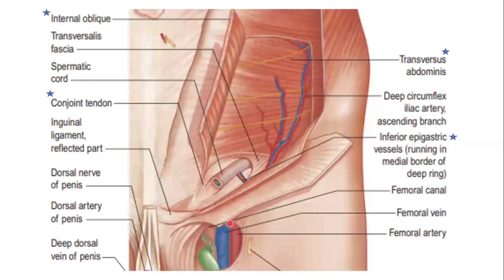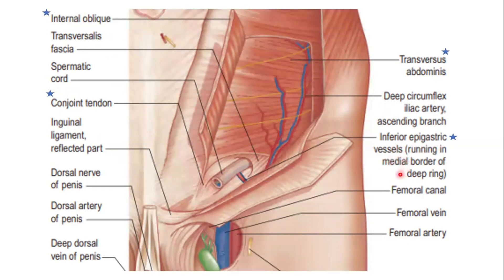In this last slide, here is another picture showing all these structures. This is the internal oblique muscle, this is the transverse abdominus muscle, and they form the conjoint tendon here. This is the spermatic cord passing through the inguinal canal, and these are the inferior epigastric vessels running along the medial border of the deep ring.